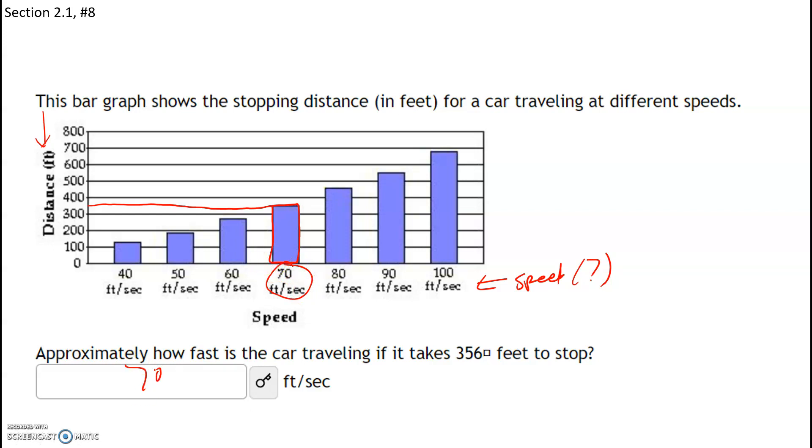Sorry, the car is traveling at 70 feet per second if it takes a car 356 feet to stop. So we'll start with the y-axis, we start at 356, take that over to the bar graph and see which of these bar graphs it represents.